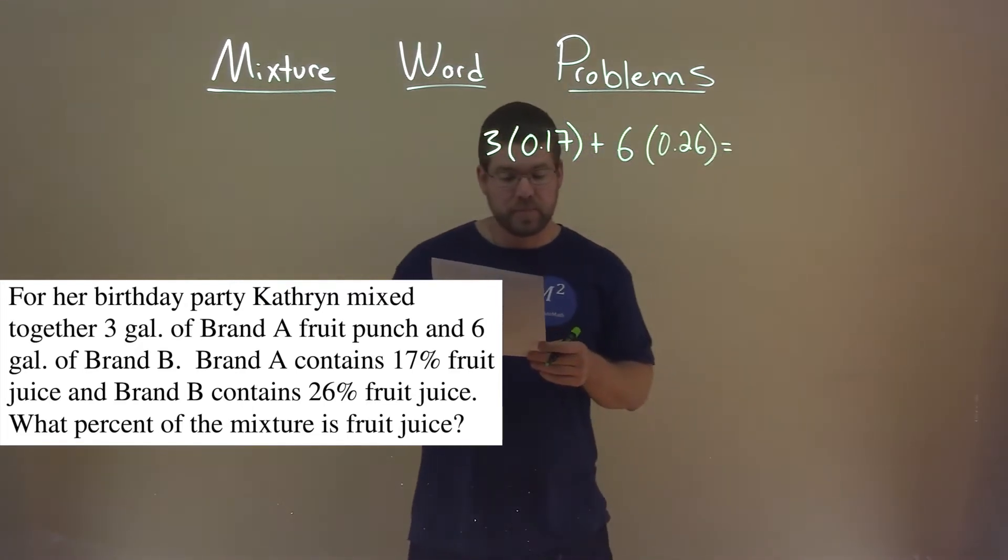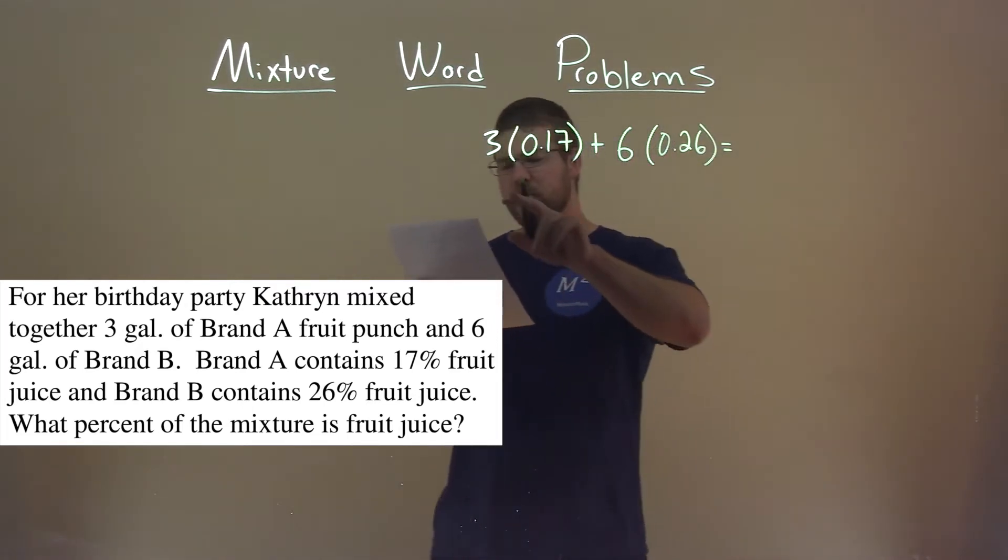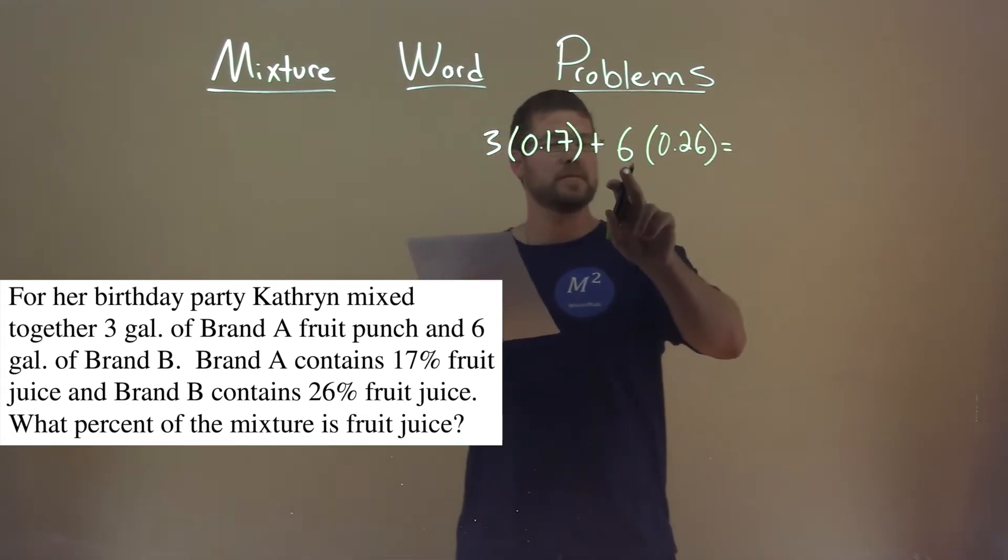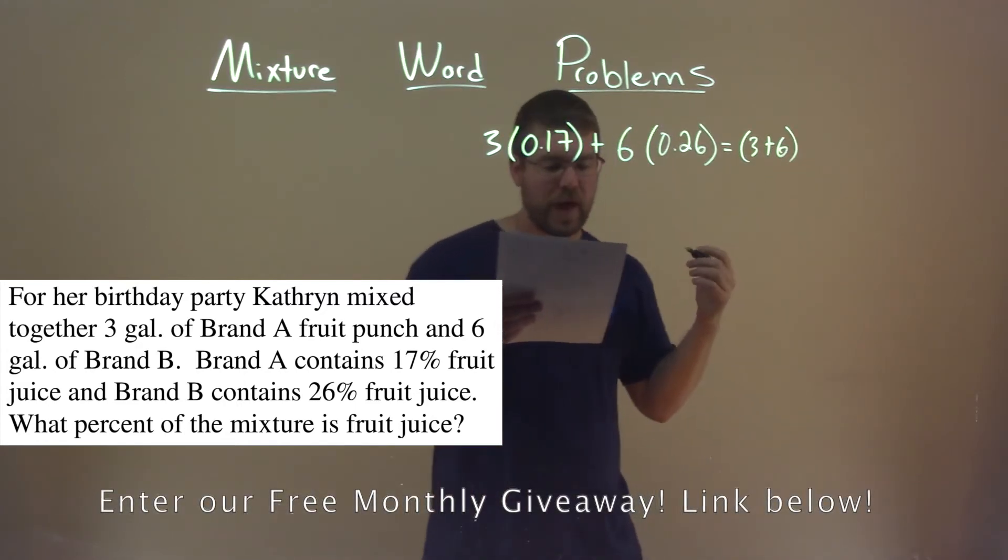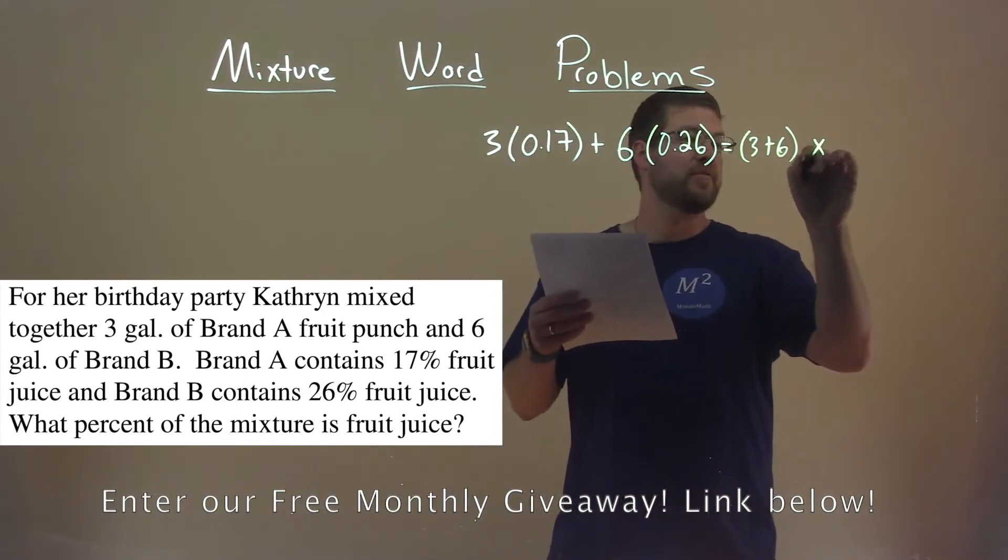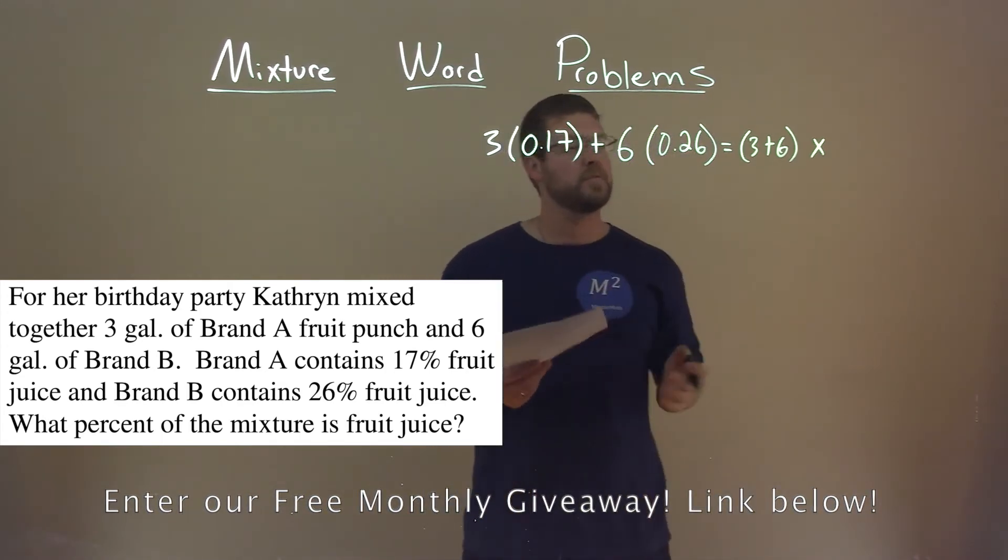What does that equal? Well, that equals the sum of gallons, right? Because we're combining it, it should equal the total gallons, 3 plus 6, times X, the mixture percent fruit juice, the final combination, which we don't know.